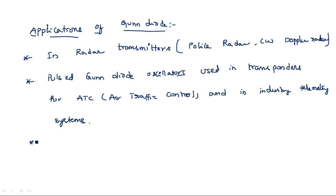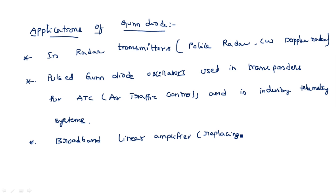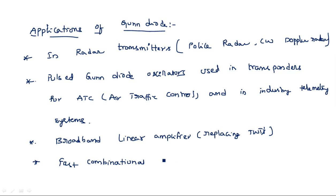Another application is as broadband linear amplifiers, replacing traveling wave tubes. Because of this feature, traveling wave tubes can be replaced with the Gunn diode. It is also used in fast combinational and sequential logic circuits.